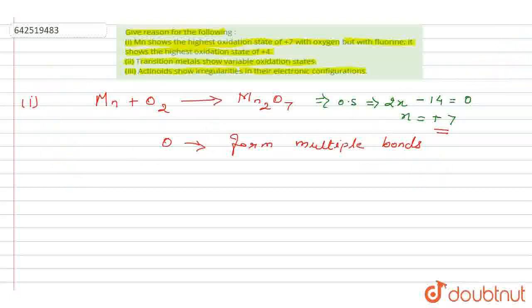Now in the second case, when manganese combines with fluorine, no multiple bonds can form. Because of this reason, MnF4 has a +4 oxidation state. So manganese shows the highest oxidation state of +7 with oxygen but with fluorine it shows +4, because oxygen has the ability to form multiple bonds. Hence the oxidation state can be extended to +7 in the oxygen case.